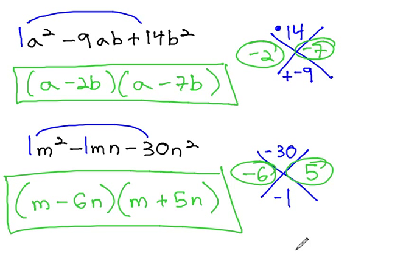Again, as a warning, the shortcuts discussed in this video only work if there is a 1 in front of the first squared variable. If there was not a 1 in front, we would need to use another method of factoring, or at least a more involved method.